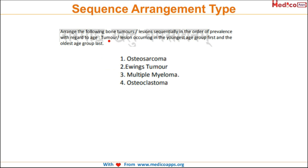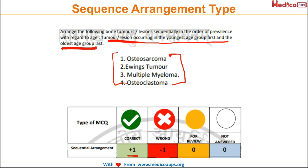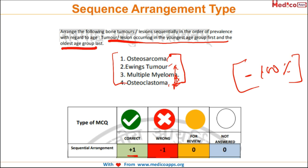For the sequence arrangement type question, for example you have to arrange 4 tumours from youngest to oldest age group occurrence. The marking is straightforward: plus 1 for correct, minus 1 for wrong — 100% negative. Importantly, even if you arrange 3 out of 4 correctly but get one position wrong, you will still get minus 100%. So attempt sequence arrangement only when you are very sure, as the negative is 100%.